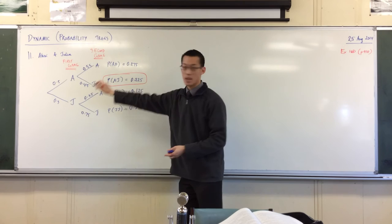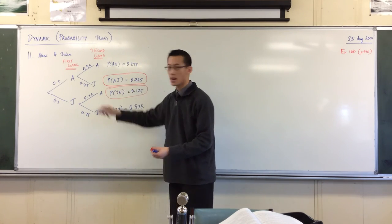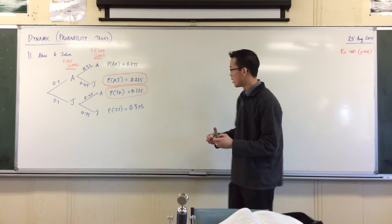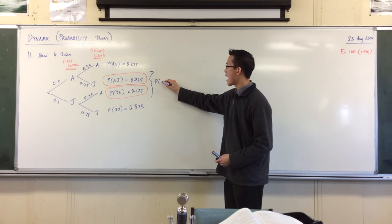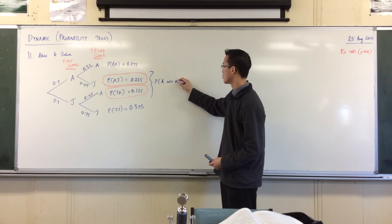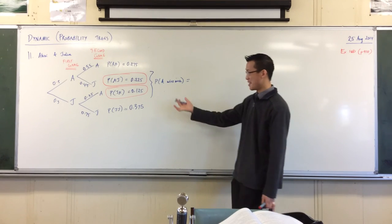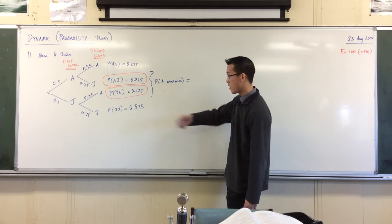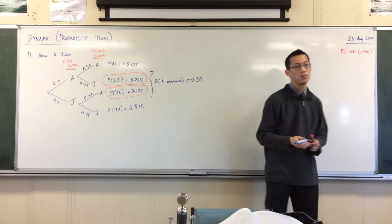Here you go. Alex wins one game here. And he wins one game here. Simple. So you could write it over here or down below if you like. The probability of Alex winning one game, once exactly, looks to me like it's 0.35, 35%. Not too bad.